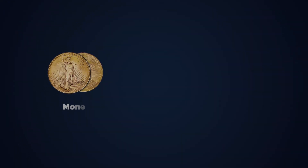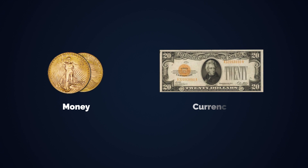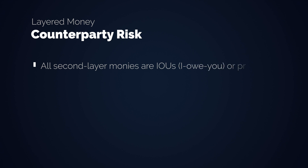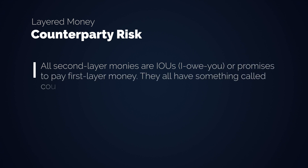The gold certificates made out of paper are just a representation of an exact amount of gold. This is also the distinction between money and currency. Gold is money; the second layer paper certificates are currency. With it comes counterparty risk. All second layer monies are IOUs, or promises to pay first layer money. They all have something called counterparty risk.